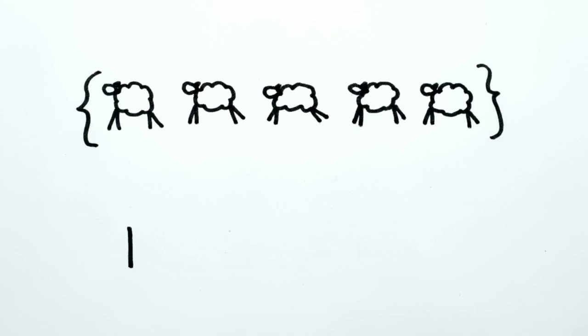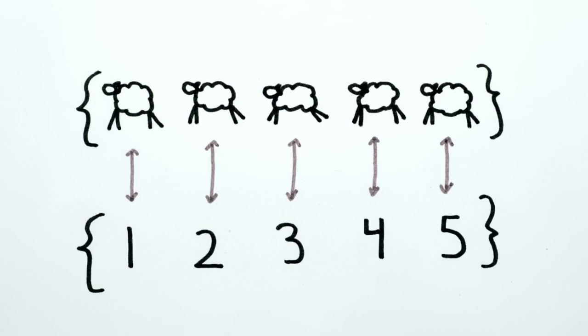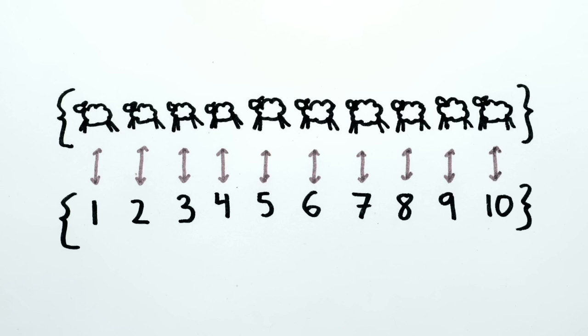like when we say that we have five sheep, we really mean we have one sheep for every number from one to five, and ten sheep means one for every number from one to ten.